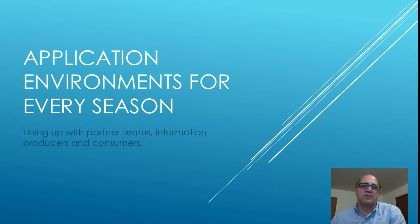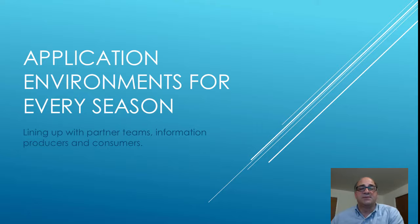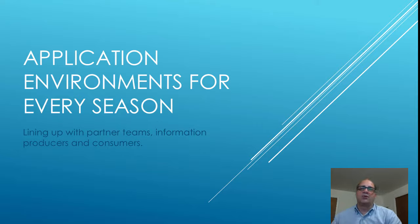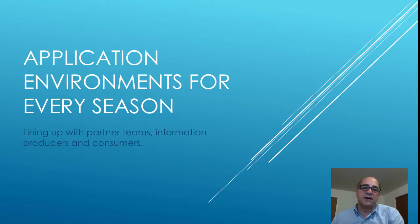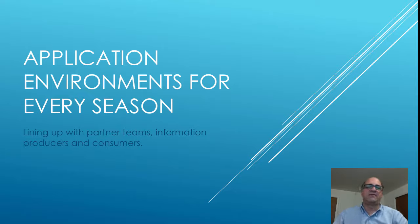A lot of teams in the beginning will start with one or two — a CI, an integration, and then a production — but really in a lot of places you'll end up with six or seven different environments. The idea is you want to line up with your partner teams, whether they're information producers or consumers, or third parties that are external. You balance the amount of work it is to create sandboxes versus the stability you provide other teams and the work reduction from not having to retarget different environments or manage competing lifecycles in the same environment.